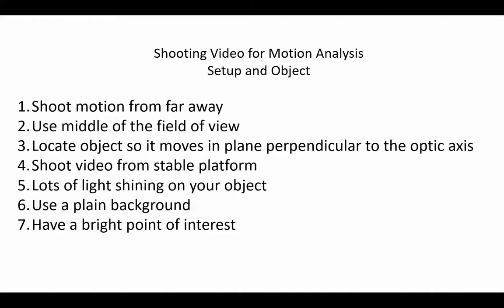There are also considerations for the setup and the framing of the motion of the object. One, shoot the motion as far away as possible to make sure that you are using the middle of the field of view for the lens. Two, have the object move through the middle of the field of view or as close to it as possible. Three, make sure the object is moving in a plane that is perpendicular to the optic axis of the lens. Make sure that the distance to the object of interest is the same, or as close as possible, at the beginning of the motion as it is at the end of the motion.